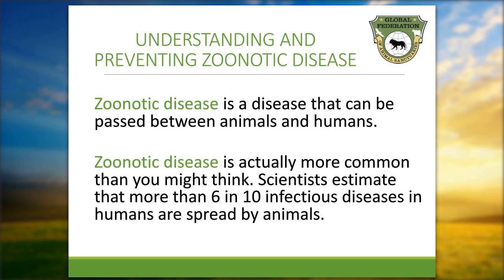So what's a zoonotic disease? Zoonotic disease is a disease that can be passed between animals and humans. A zoonotic disease is actually more common than you might think. Scientists estimate that more than 6 in 10 infectious diseases in humans are spread by animals.